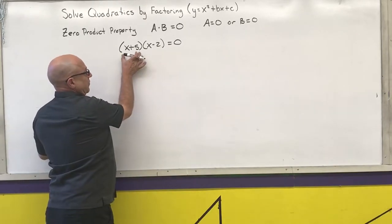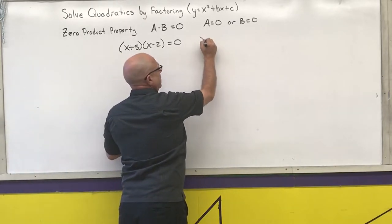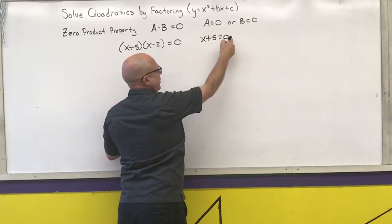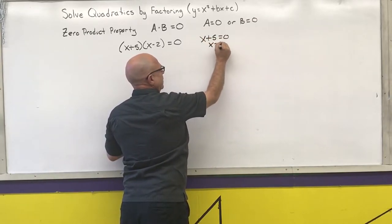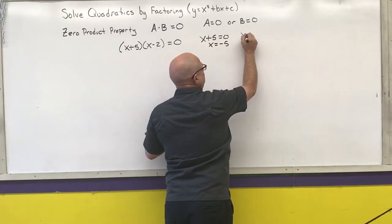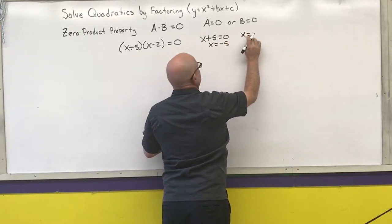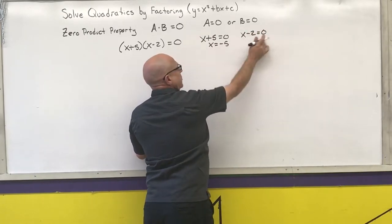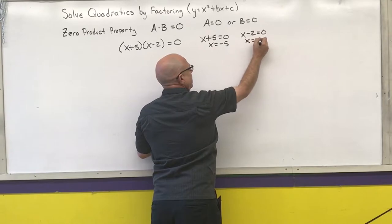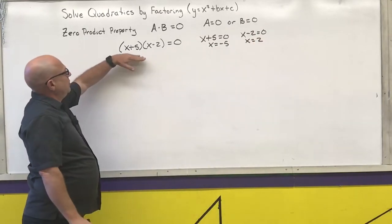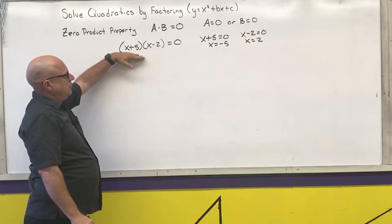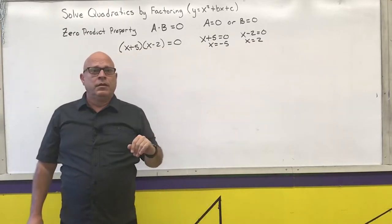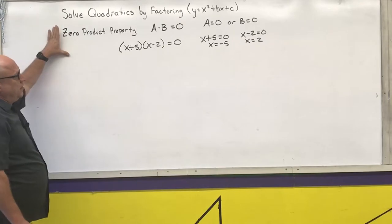So I would set the first expression equal to zero and solve — subtract 5 from both sides — and then set the second expression equal to zero and add two to both sides. The solutions to this expression would be x equals negative 5 or x equals 2. That's how the zero product property comes into play.